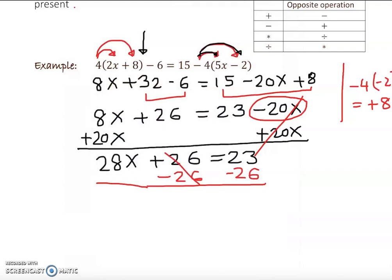Then we bring down 28x equal to negative 3. Remember, adding with different signs.